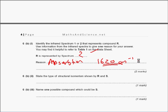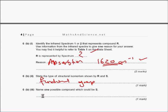Spectrum two is represented here because we have absorption at roundabout - you'll have to be exact, you'll have to use the table for this, I'm working from memory and my memory gets worse. One mark for spectrum two, one mark for around 1620, the type of isomerism is functional group isomerism because you've got double bonds in there. Name one possible compound: it's saturated but has two fewer hydrogens, so it's going to be a cyclo compound - cyclo hexane, if it was six carbons.